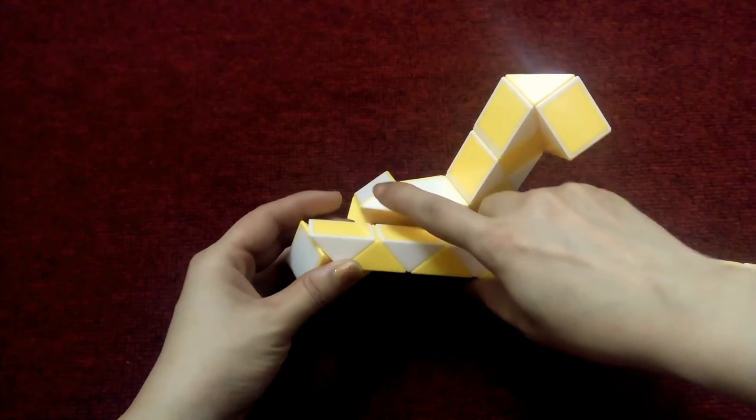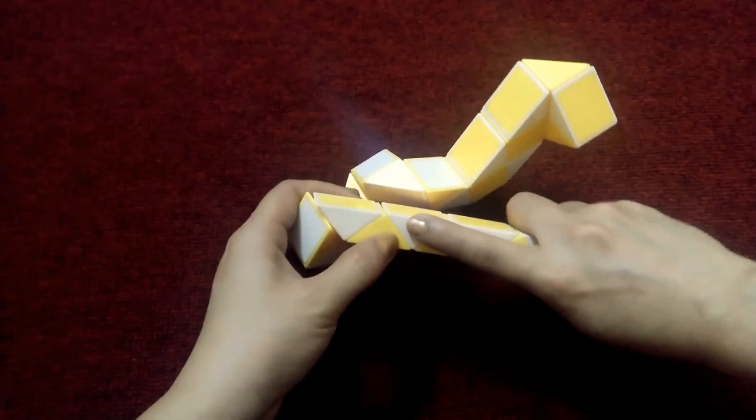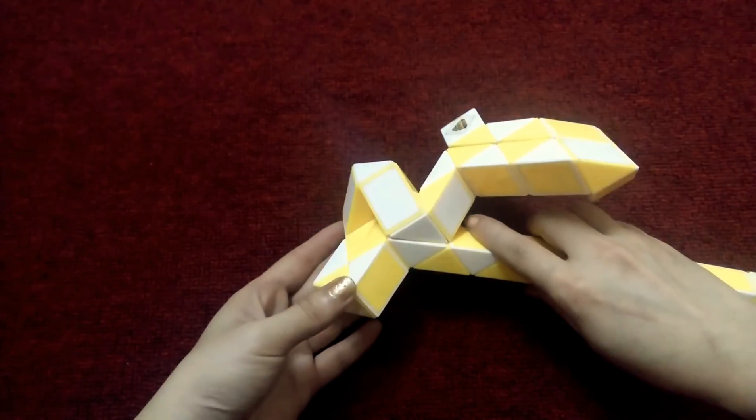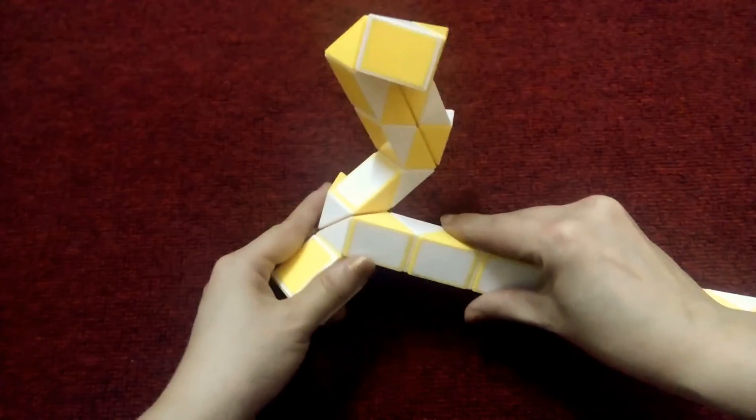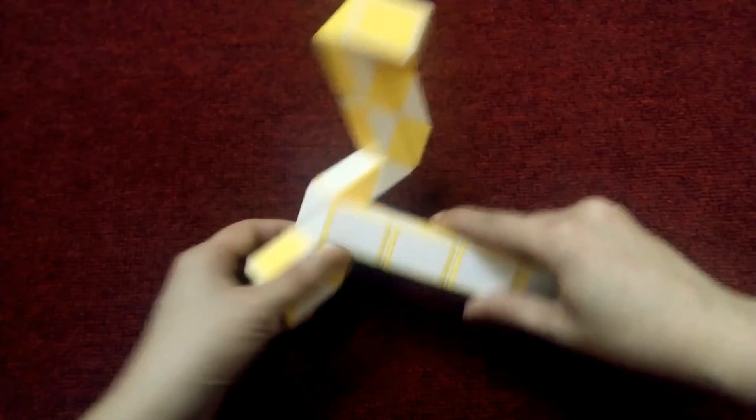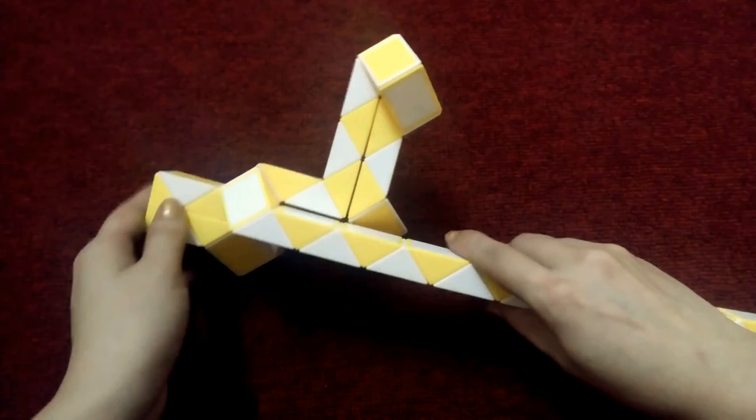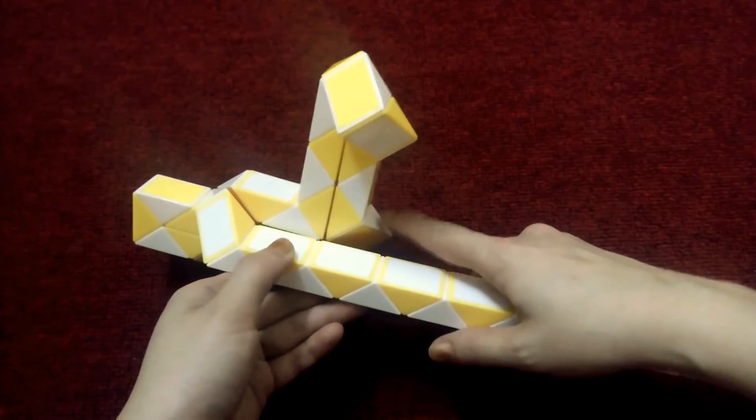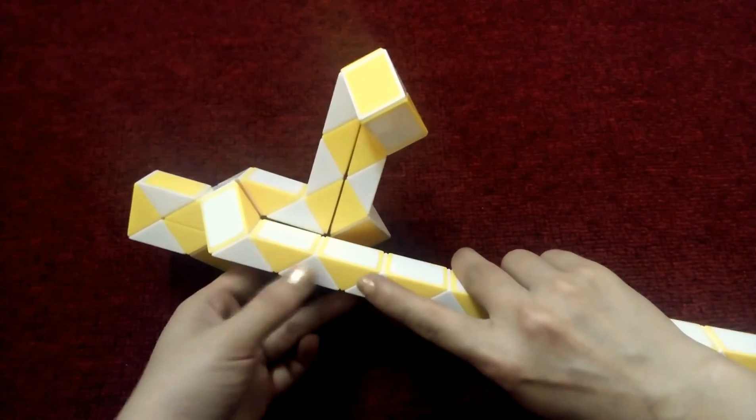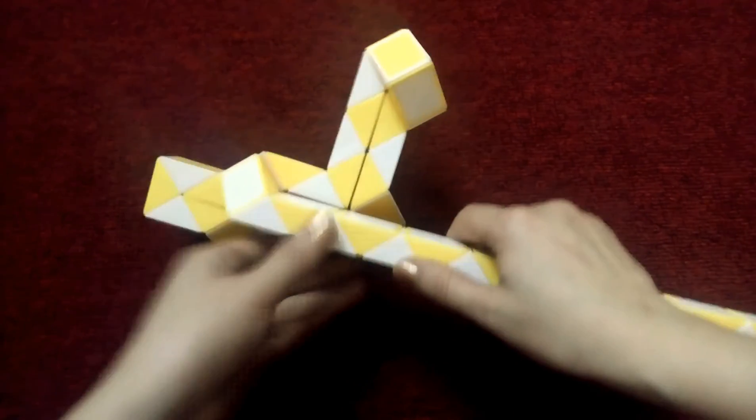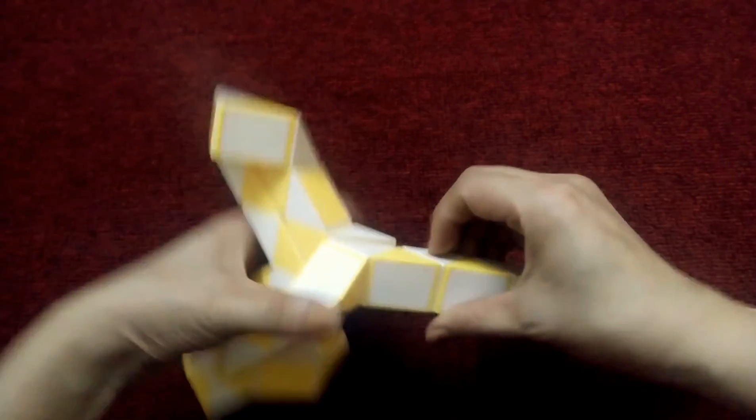So you can see, white and white can match, so you move like this. It's white, so you can match here. One two three, one two three, three. Go right and move this.